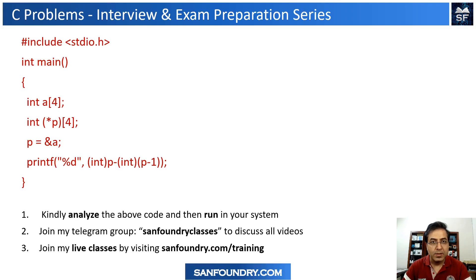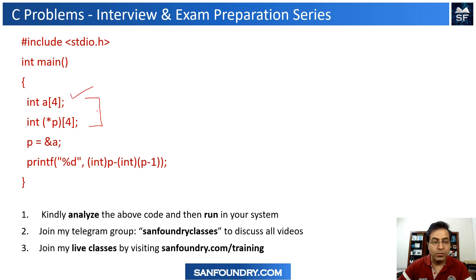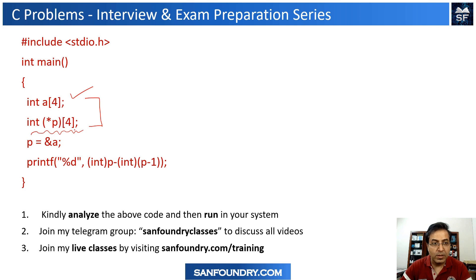Dear friends, this is a very specific example around complex pointers. It is not so much complex, but when you look into this particular example, you will see that I have declared an array of four integers and then written one declaration. So I have defined one variable called P — it's a pointer. I will explain this in more detail, but I would want you to think about what this representation really means. It's a combination of pointer and an array.